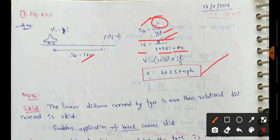So finally, looking at the skidding of the vehicle, the speed before skidding is 40.73 kmph.